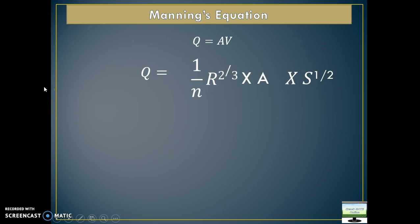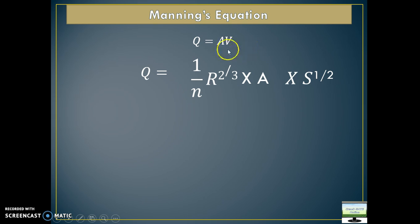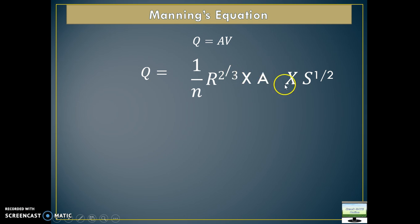Let's begin with Manning's equation. This equation is mostly used to calculate the velocity of flow. Discharge is nothing but the multiplication of area into velocity, and Manning's equation is used to calculate the velocity. Manning's equation is: v = (1/n) × R^(2/3) × S^(1/2). Please have a pen and paper so that you can write and remember — this is a very important equation.